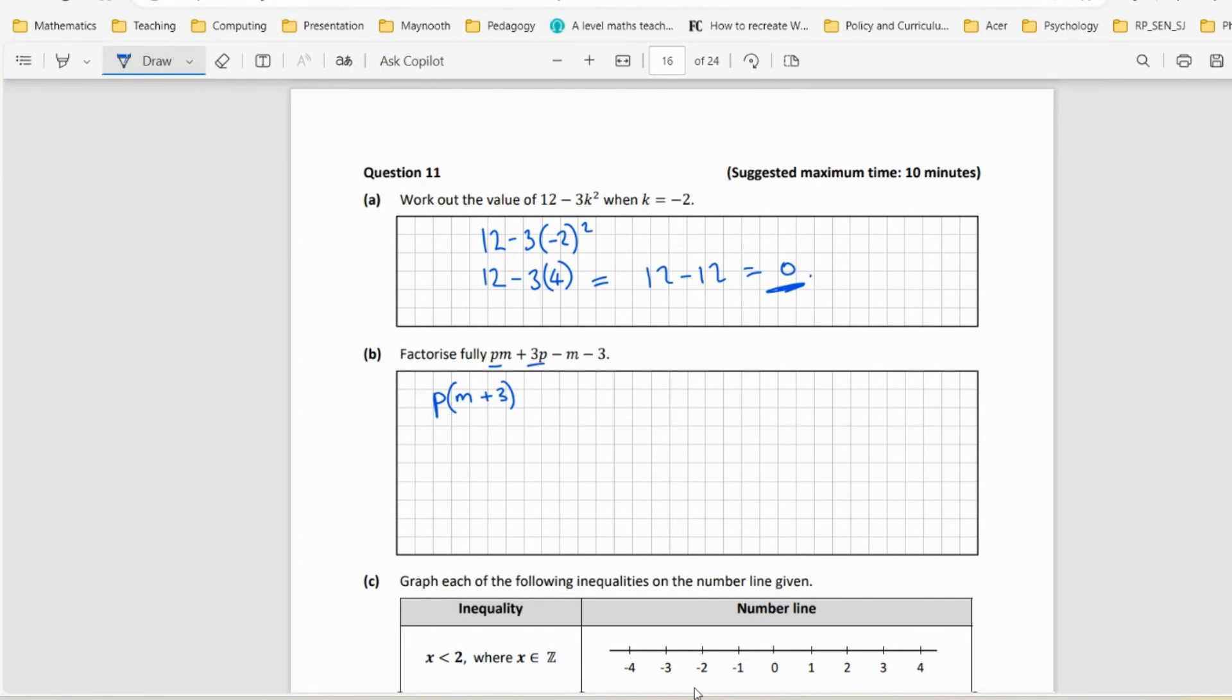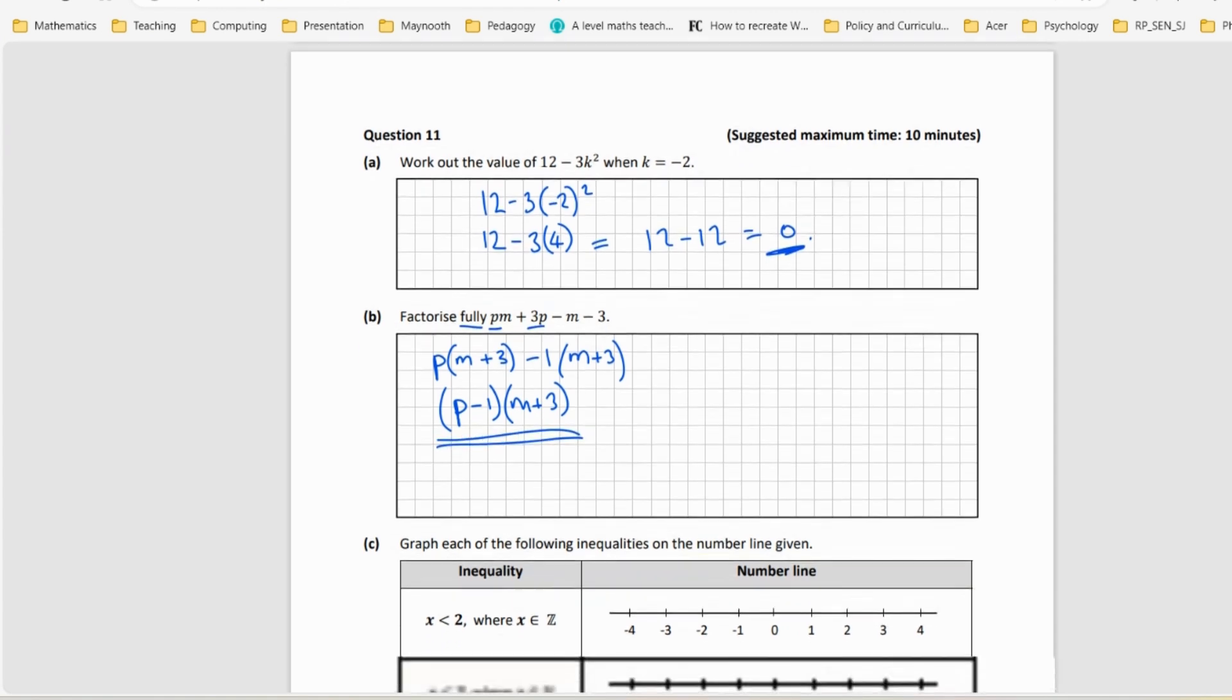Now if this is a reasonable grouping, then the other one will have to be n plus 3 as well. So what can I factor out of those two to get n plus 3? Well, minus 1 would work. Minus 1 by minus n would be plus n, and minus 1 by minus 3 would give me plus 3. So my answer then is going to be p minus 1 and n plus 3. They said fully here, so I always get a bit suspicious when I see that—is there anything else we could do? No, there isn't. So that's the answer.